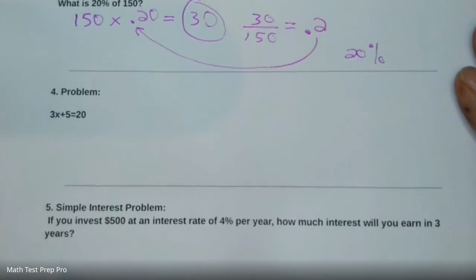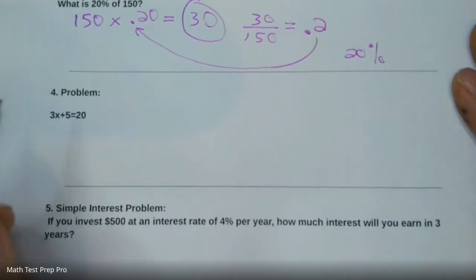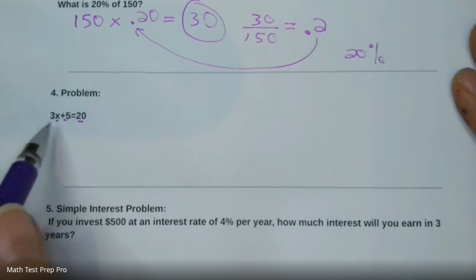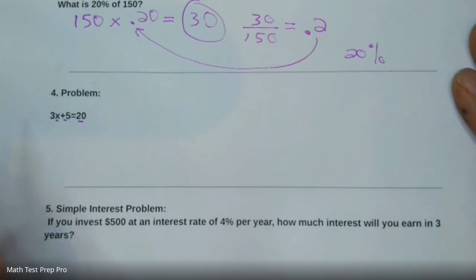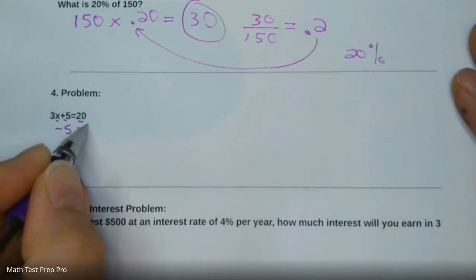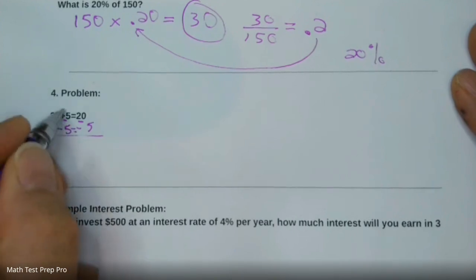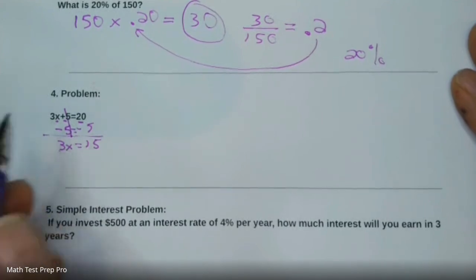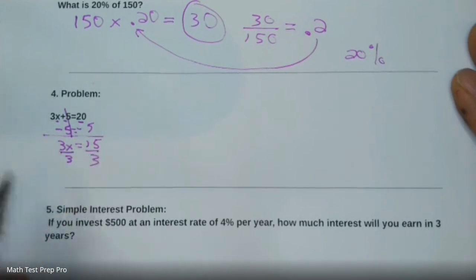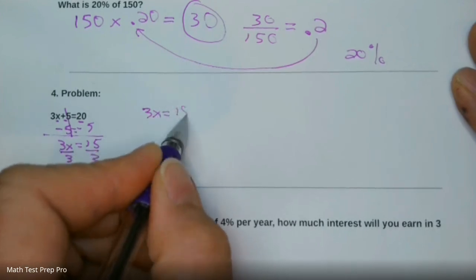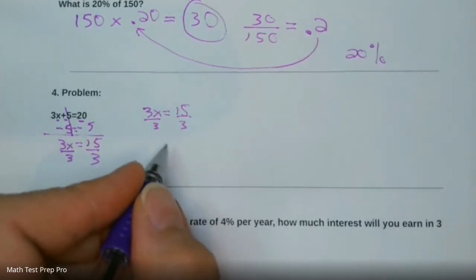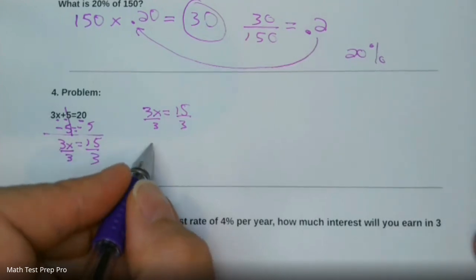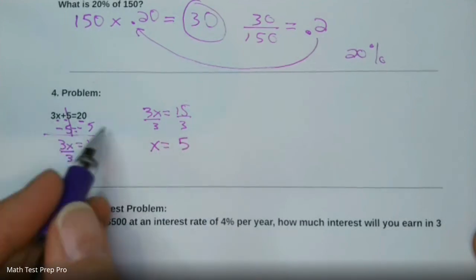Here is another problem — a single variable equation that we're going to solve. You've got a variable and some constants. We want to get X by itself, so we're going to do reverse PEMDAS — start with addition and subtraction, then work to multiplication and division. First, we subtract 5 on each side; whatever you do to one side, you do to the other. The two 5s cancel out, leaving 3X equals 15. To undo 3 times X, we divide by 3 on each side. X equals 15 divided by 3, which is 5. So X equals 5, and that's your answer.